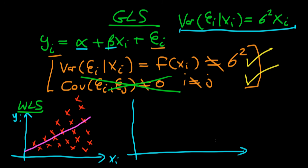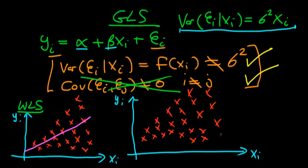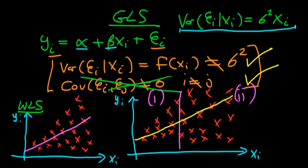Now let's think about what happens if we try to estimate this via least squares. Consider splitting the domain of yi and xi into two distinct areas — region 1 and region 2. As xi increases, the variance of yi increases. Region 1 has a much smaller variance in yi — the distances of points away from the line tend to be smaller there, so this is a low variance region.